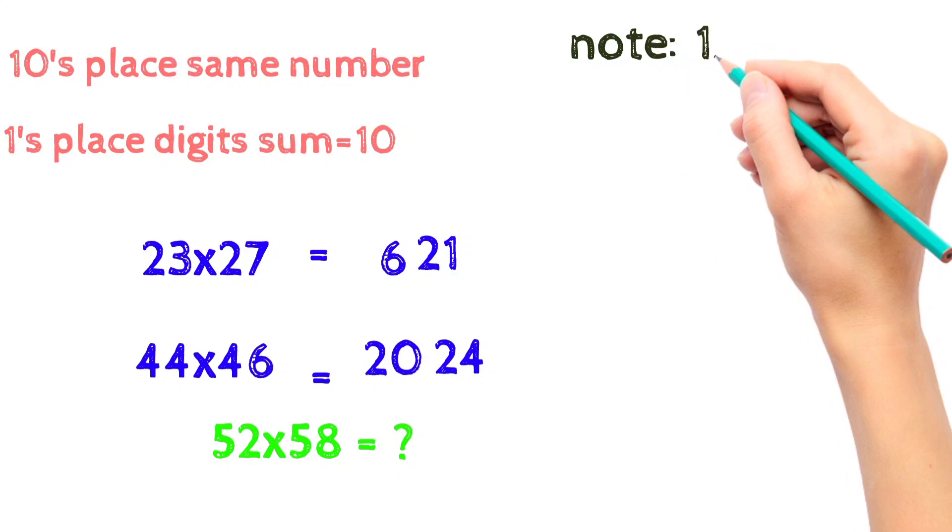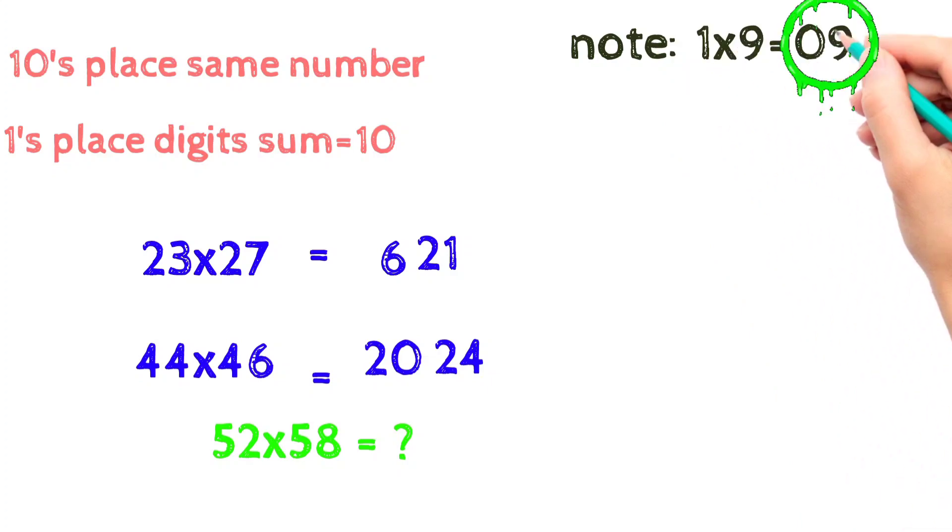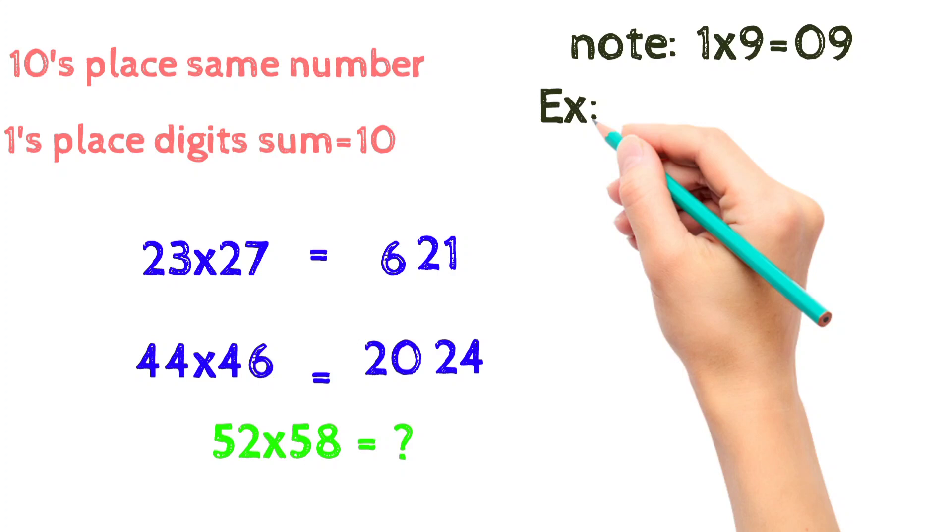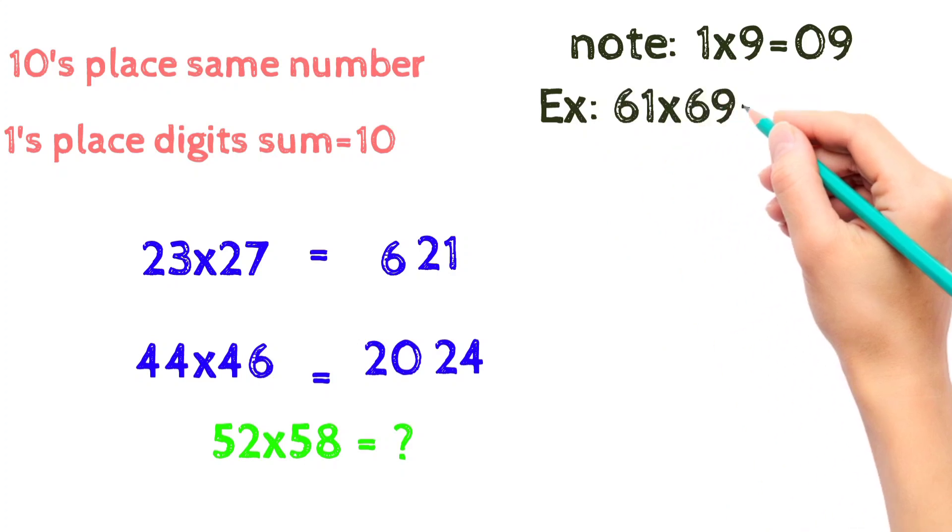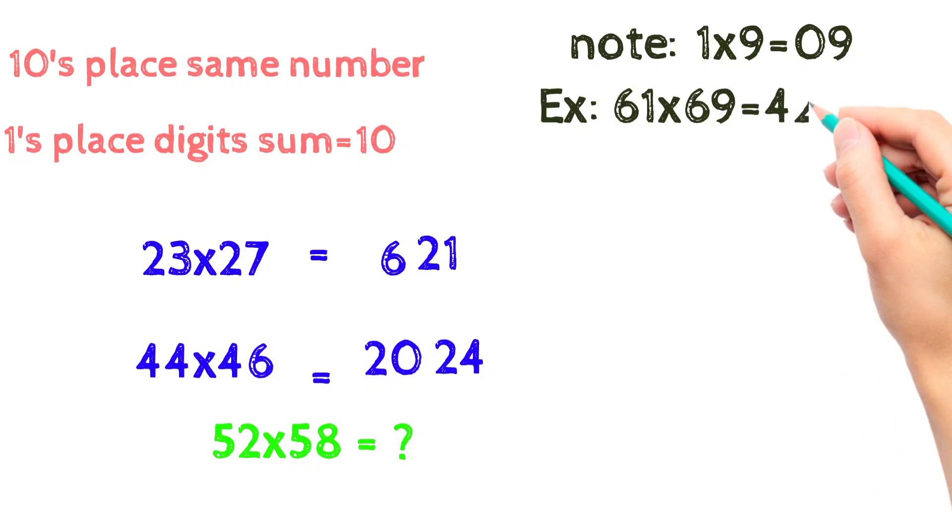Note: when multiplying ones place digit results to a single digit number, add 0 in front of it. For example, multiplying 1 into 9 is equal to 9, a single digit number. Therefore add 0 in front of it and hence the result is 4209.